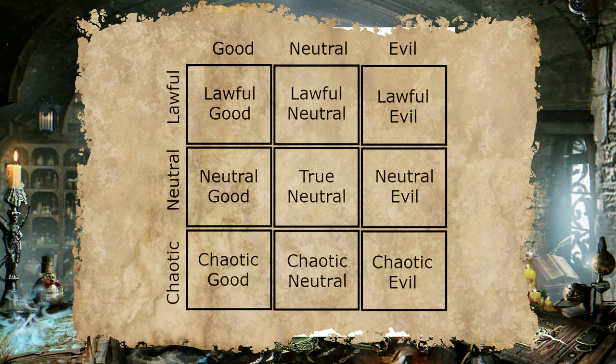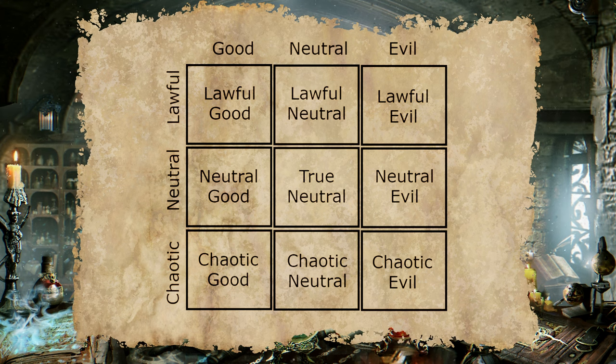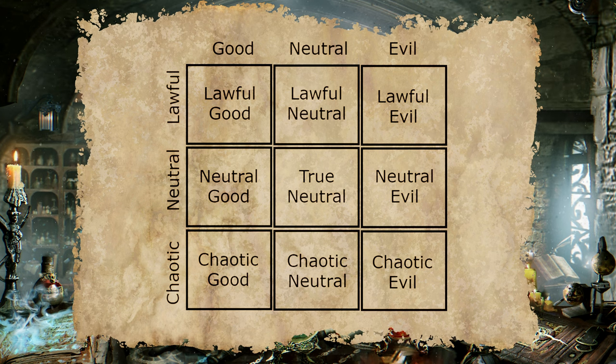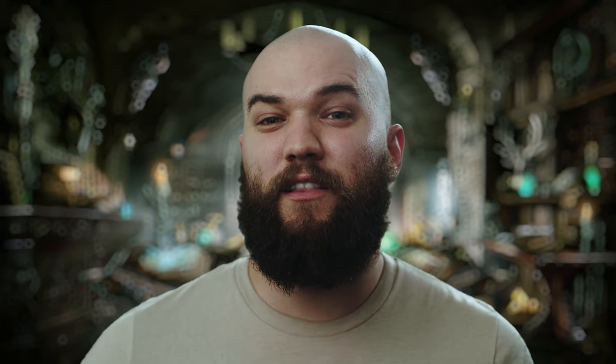Shown here are the two spectrums that dictate those possibilities. The first weighs the morality of a character or creature from evil to neutral to good. The other contemplates the beliefs of that entity as it pertains to adherence to the rules of society, from lawful to neutral to chaotic.